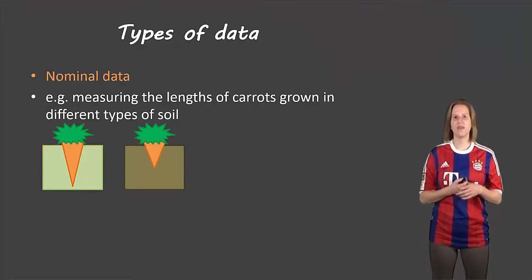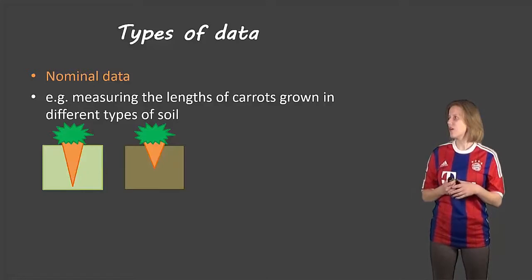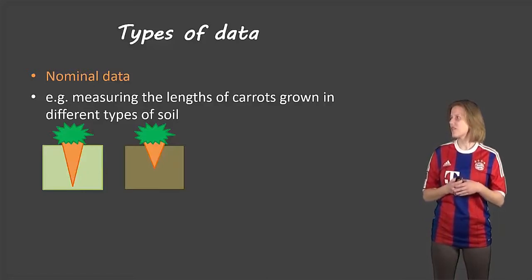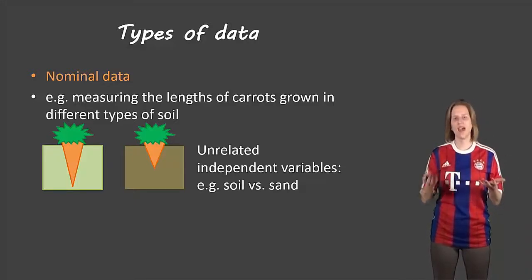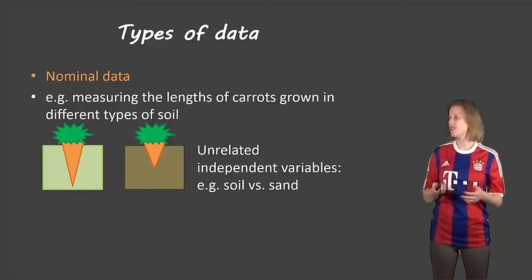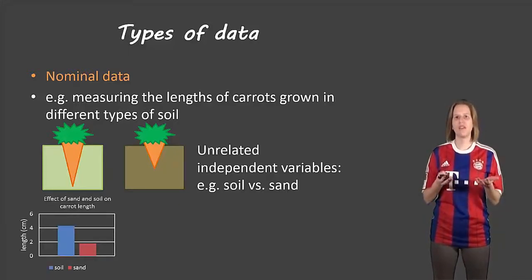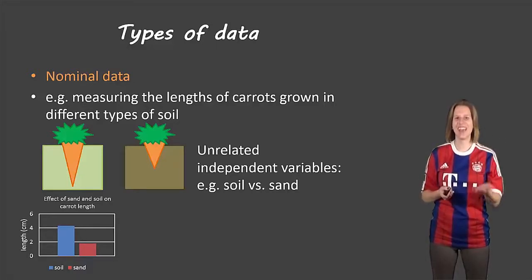So there are three types of data that we need to know about. The first one is called nominal data. An example of that would be measuring the lengths of carrots grown in different types of soil. Now these are unrelated independent variables. So we have soil and we have sand. These are not related to each other in any logical or mathematical way. So to compare these types of data we would use a bar graph. We can compare them, but it's not like soil or sand has a number associated with it. So we can only use a bar graph that has the data labels for each.